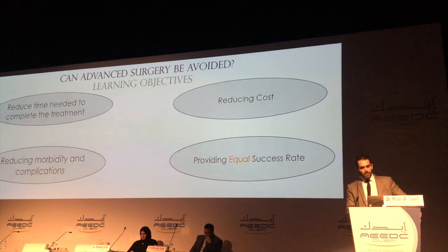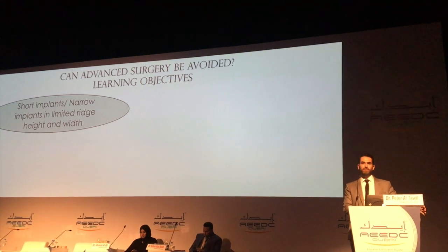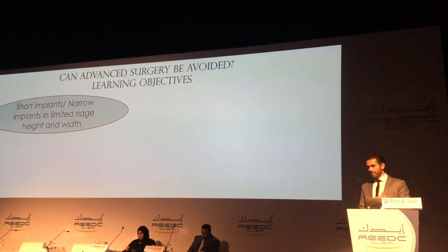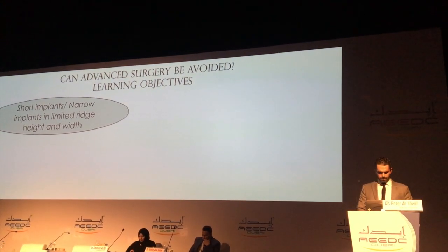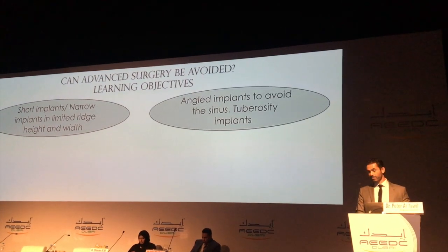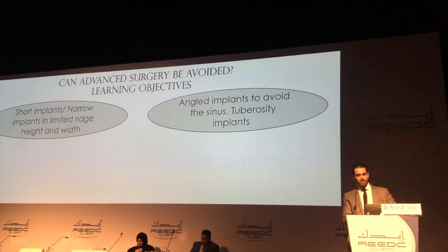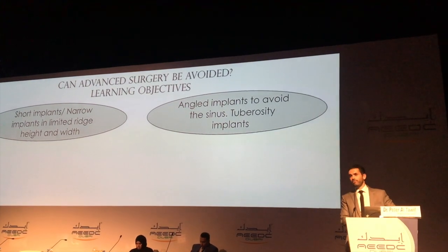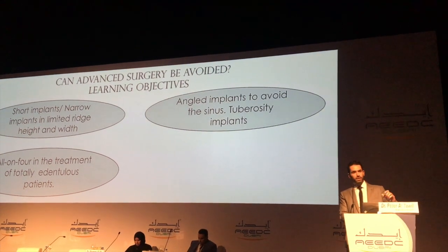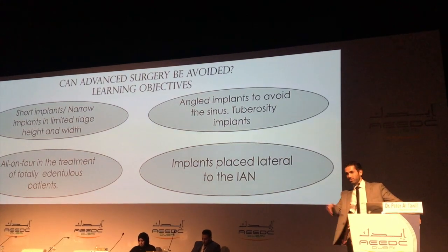Today we'll be talking about four different techniques. First is short implants — short implants in the mandible and short implants in the maxilla — with a long period of follow-up, and how predictable that is, supported by literature. Also the use of narrow implants, both height and width. The use of angled implants and tuberosity implants. The use of septa in the sinus to avoid advanced surgeries such as sinus lifts. The all-on-four treatment — we'll talk about it briefly since it was discussed this morning. And finally, implants placed lateral to the alveolar nerve.